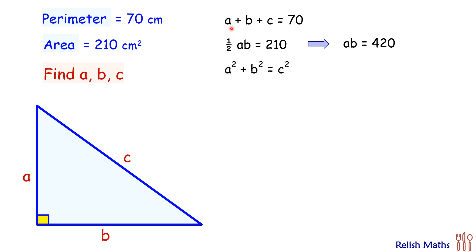Now let's start with the first equation and shift this plus c on the other side, so we get a plus b equals 70 minus c. Taking square on both sides, we get the left side as a squared plus b squared plus 2ab, and the right side will be 70 squared, or 4900, plus c squared minus 2 times 70 times c.